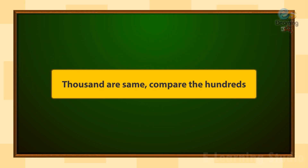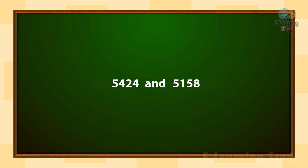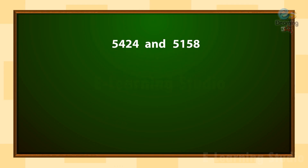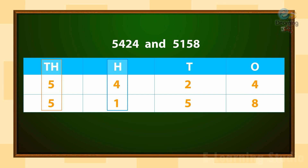Children, if the thousands digits are the same, we compare the hundreds. Here in this example, you can see the numbers 5,424 and 5,158. Arrange the numbers in their place value. If the digits in the thousands place are equal, we compare the digits in the hundreds place. We can see in the hundreds place, 4 is greater than 1. So 5,424 is greater than 5,158.